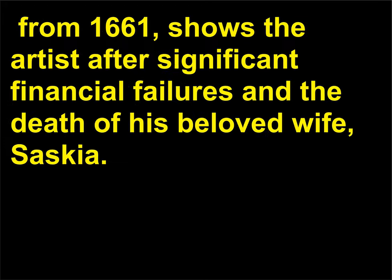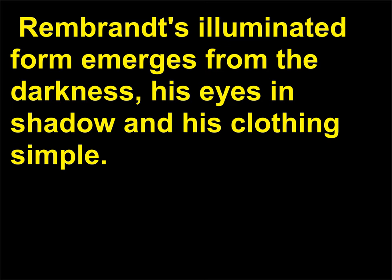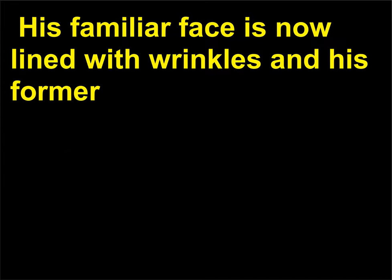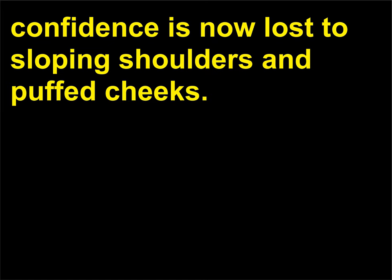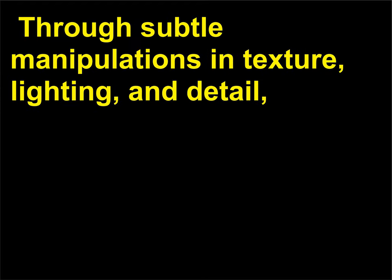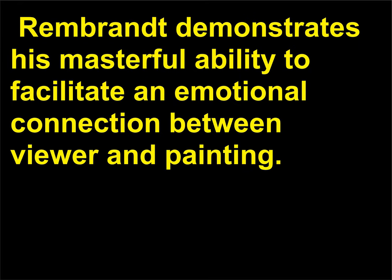One of Rembrandt's later self-portraits, from 1661, shows the artist after significant financial failures and the death of his beloved wife, Saskia. Rembrandt's illuminated form emerges from the darkness, his eyes in shadow and his clothing simple. His familiar face is now lined with wrinkles and his former confidence is now lost to sloping shoulders and puffed cheeks. Through subtle manipulations in texture, lighting, and detail, Rembrandt demonstrates his masterful ability to facilitate an emotional connection between viewer and painting.